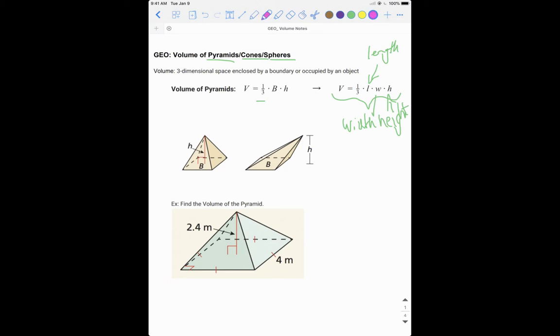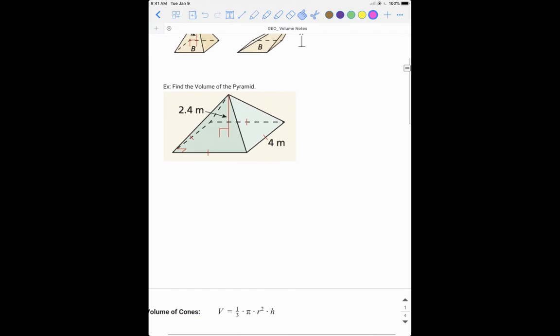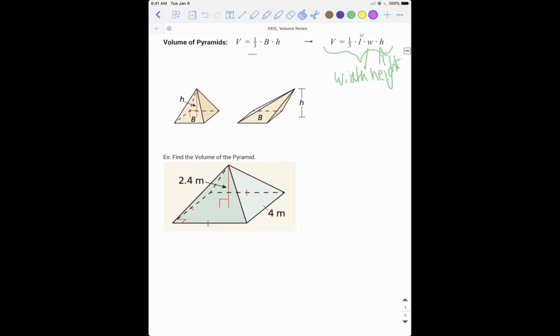So let's look at one. We're going to look at this pyramid down here and find the volume. We're told our height is 2.4 meters. We're told this side is four meters. Notice we have these little dashes - hopefully you recall that those little dashes mean that all of our sides are the same. So since this one is four, we also know this one is four. In this case, our length and our width are the same because we have a square bottom. Our height is 2.4.